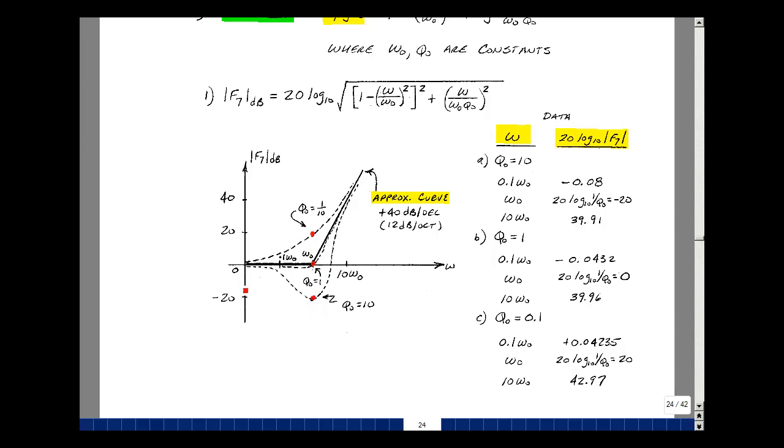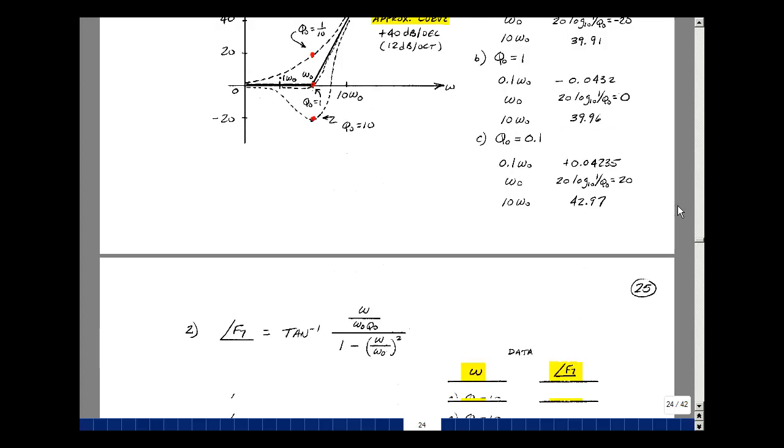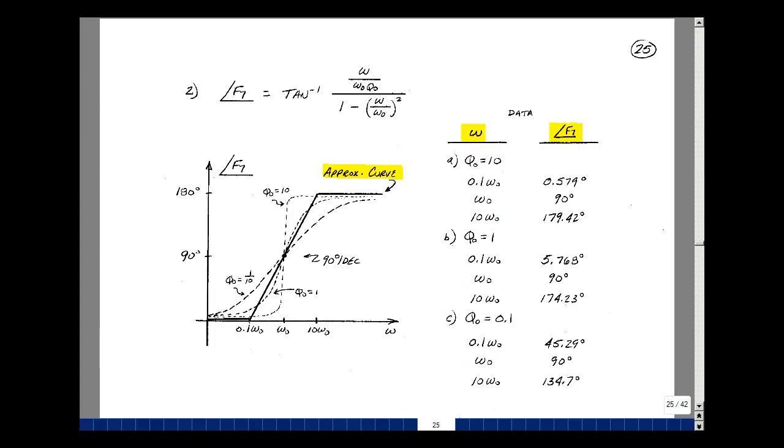What about the phase angle? The angle of f7 is the arctangent of the imaginary over the real, which is (omega/omega naught q naught) for the imaginary part, and for the real, 1 minus (omega/omega naught)². Let's again take three values of q naught—low, medium, and high—and see what happens with the ratio of omega to omega naught.